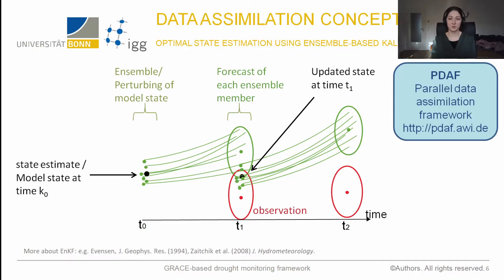The concept we use for data assimilation is the ensemble-based Kalman filter. It begins with a state that is perturbed by ensemble members, and then for each ensemble member we do a forecast which is updated with real observations. In between we find our new state, and this procedure repeats.